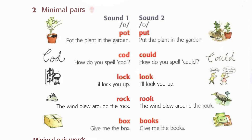2D: Pot the plant in the garden. Give me the books. The wind blew around the rock. How do you spell could? I'll look you up.